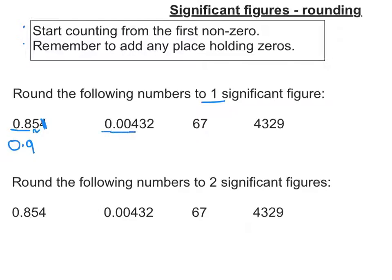Start counting until I get to the first non-zero, that's the four. Three tells me to round up or stay the same and two I can ignore. So this becomes 0.004, no further. That's to one significant figure.